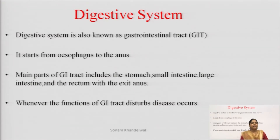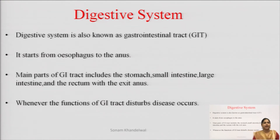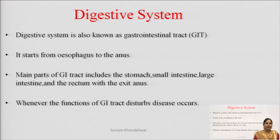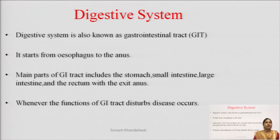The digestive system starts with the esophagus and ends with the anus. The main parts of the GI tract are our stomach, small intestine, large intestine, rectum, and anus. All these parts combined are referred to as the gastrointestinal tract.